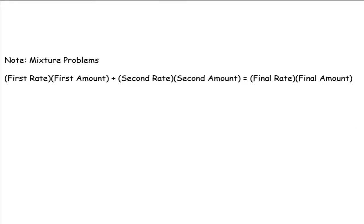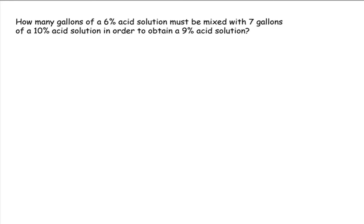All right, so here's an example. How many gallons of a 6% acid solution must be mixed with 7 gallons of a 10% acid solution in order to obtain a 9% acid solution? Everybody see we're mixing two different things together to come up with a third mixture?